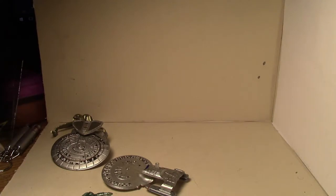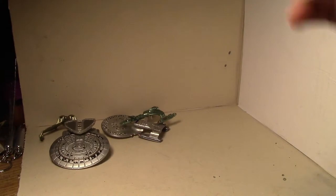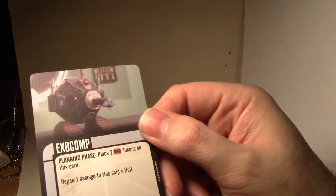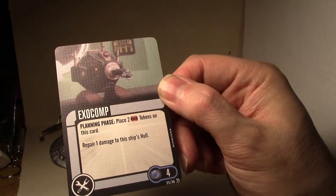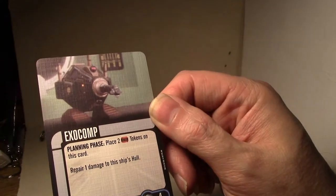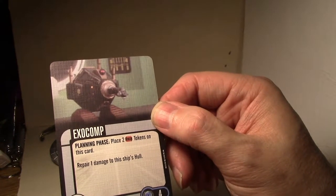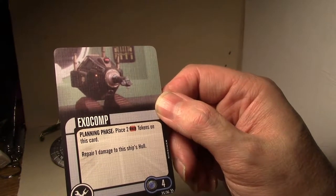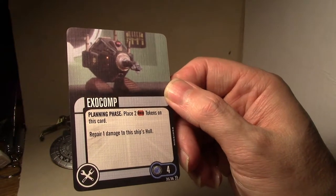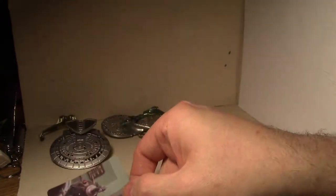So we've got a whole stack of cards here. Some of these are really amazing. Okay, so let's just start at the top here. So we've got the Exocomp. Four point tech. Planning phase. Place two tokens on this card. Repair one damage to the ship's hull. So that means you can just repair one damage every other turn. No action. No restrictions. Just very nice. And it's not unique. So you could actually have two on a ship and at least repair one hull every turn. Nice. Very nice card. Very efficient.